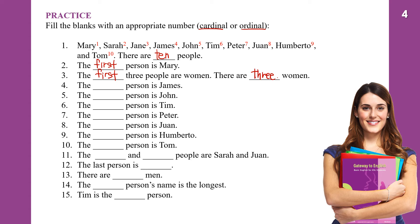The fourth person is James — James is number four. The fifth person is John. The sixth person is Tim — six plus TH makes sixth. The seventh person is Peter. The eighth person is Juan.